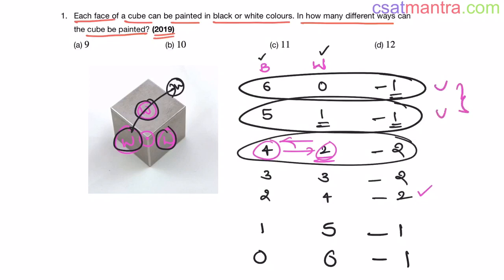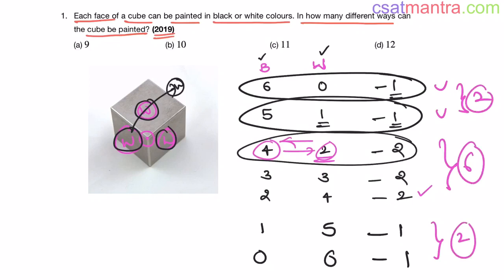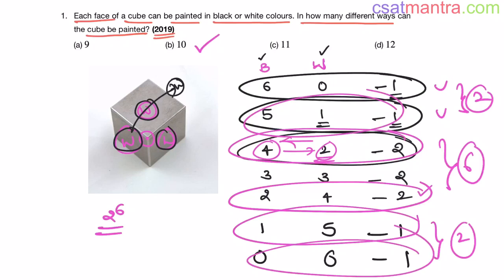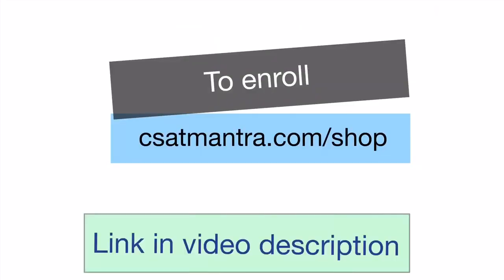So the total number of different ways the cube can be painted is: 1 + 1 + 2 + 2 + 2 + 1 + 1 = 10. Our answer is B, which is 10. Because the cube is symmetric, we cannot have 2 power 6 ways. We use symmetry, and cases mirror each other: the 2-white case matches the 4-white case, the 1-white case matches the 5-white case, and so on.